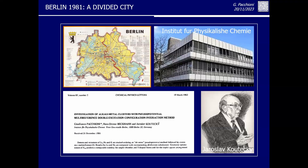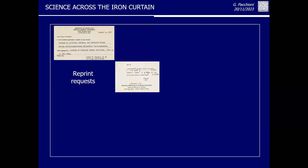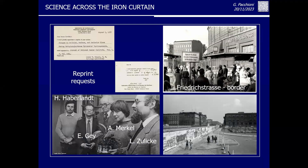When I was there at the Free University, I received reprint request cards — there was no internet at the time, so people sent small cards asking for a reprint of your paper. I got three of these requests coming from the Academy of Sciences in the DDR, from the East Berlin part. I answered with a letter and got in touch with these people. I started to regularly visit them in East Berlin. The man who wrote me the card was Helmut Haberland, a scientist where I also met Angela Merkel and others, and we started a collaboration in a time when things were completely different from now.